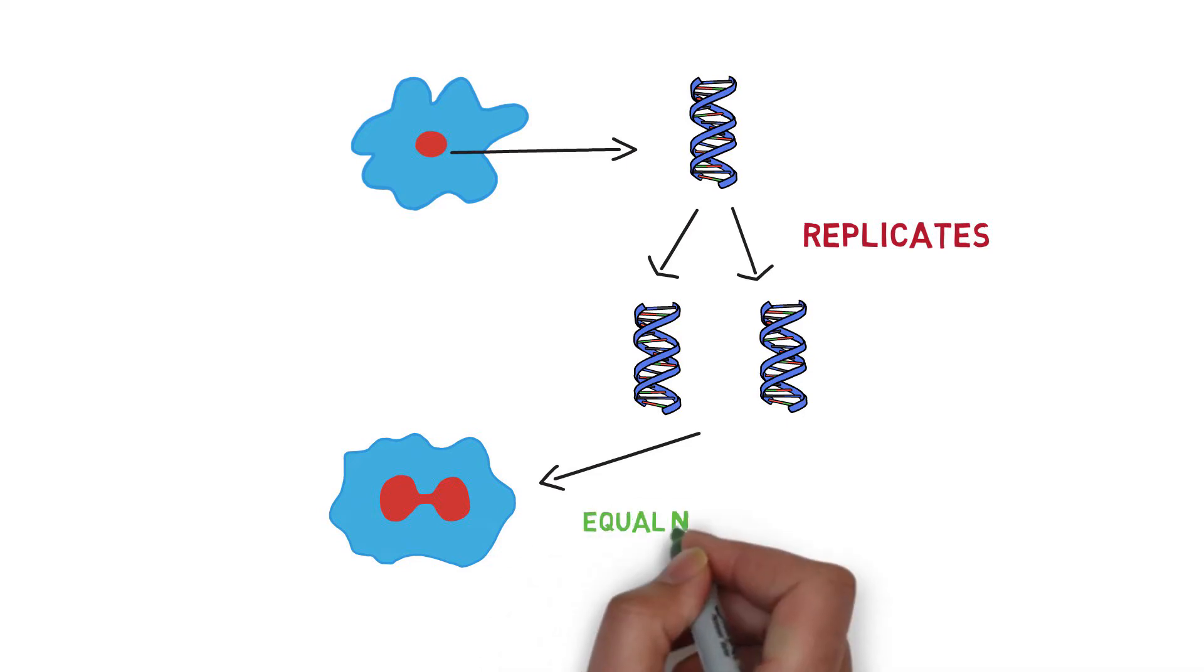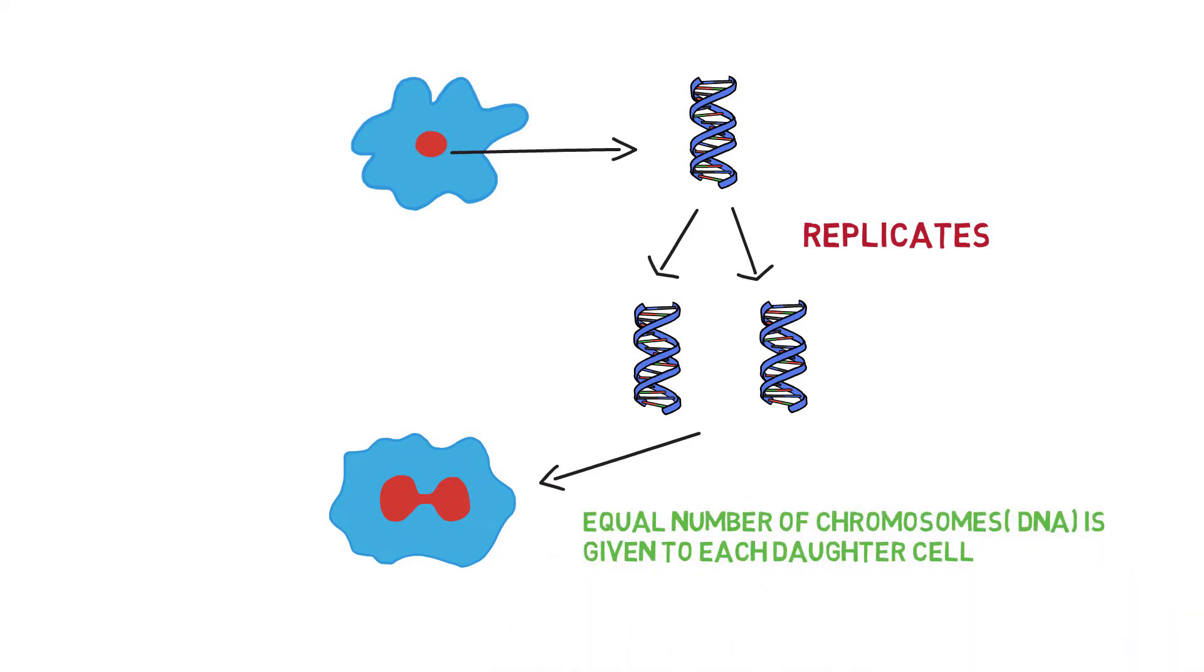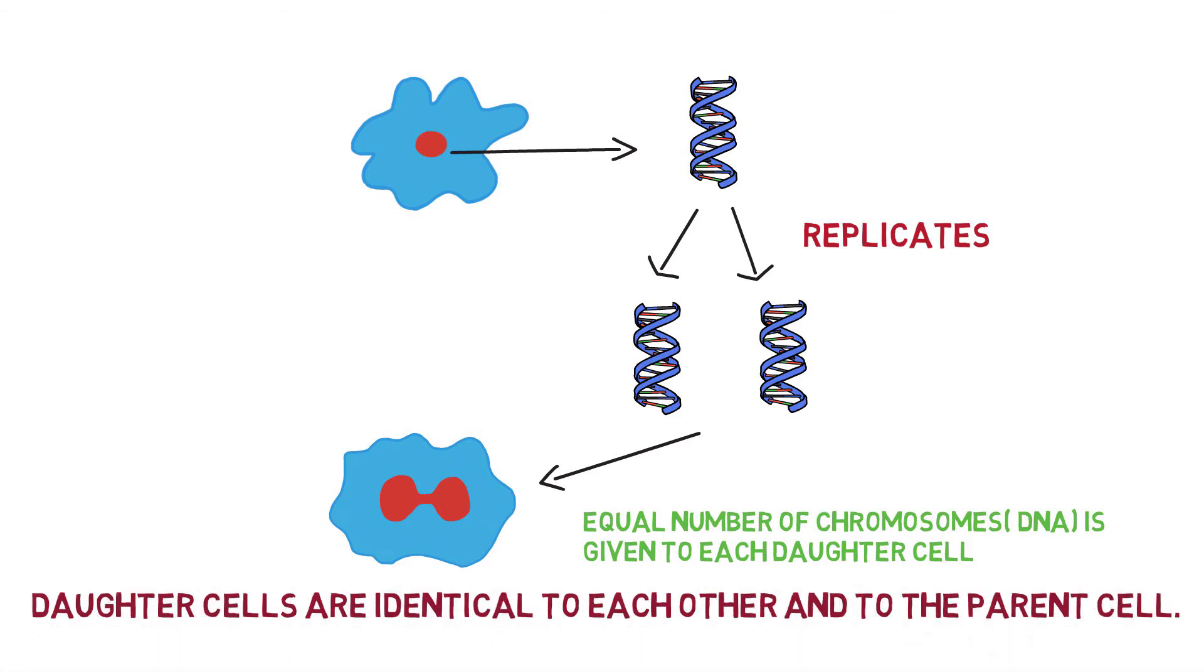Each daughter cell then receives an equal number of DNA molecules. When the cell divides into daughter cells, each cell is identical to others and the parent cell because there is no variation in asexual reproduction.